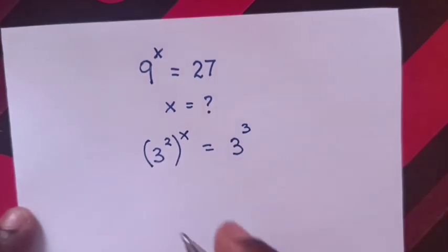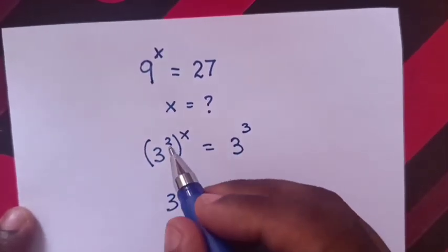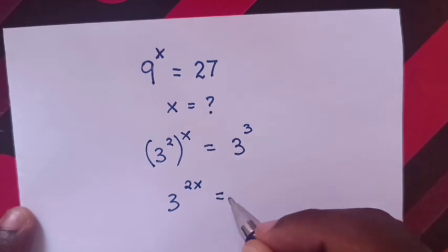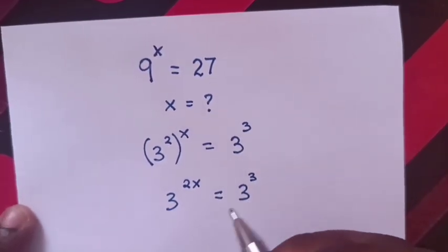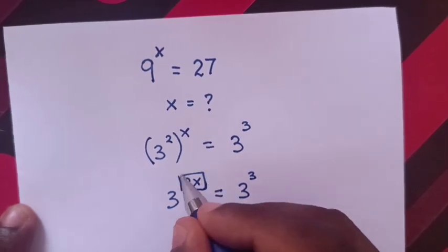Now, our equation will be 3 power of 2 times x is 2x is equal to 3 power of 3. Now, from same base, so we compare these powers.